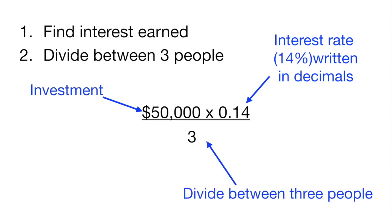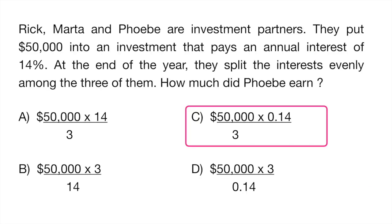The reason you divide it by three is because we said that there's three people that are investing: Rick, Marta, and Phoebe. So if you wanted to know how much they earned, we said that they were going to divide the earnings equally so you would divide it by three. So the answer here would be C.